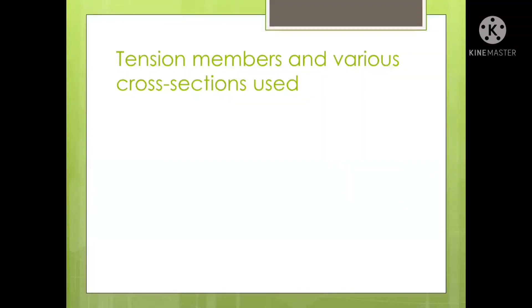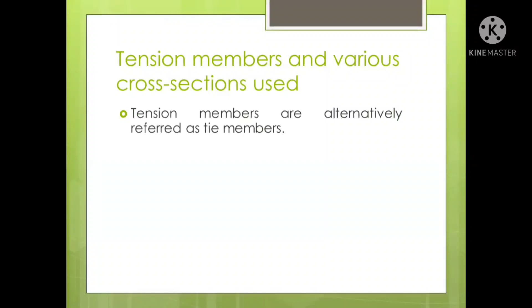First of all, we shall see what are the different cross sections that are used as tension members. The alternative name for tension members is tie member, which are usually the members we find in a truss on the bottom side. Bottom members are usually the tie members because these members carry tension due to loading.